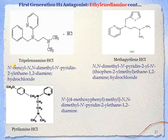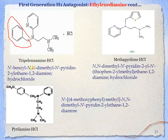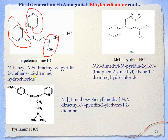Examples of ethylenediamine derivatives include tripelamine, whose IUPAC name is N-benzyl-N,N-dimethyl-N'-pyridinyl-1,2-ethane diamine hydrochloride. The ethylene chain consists of carbon 1 and carbon 2, with two amine groups forming the diamine portion, existing as a hydrochloride salt.